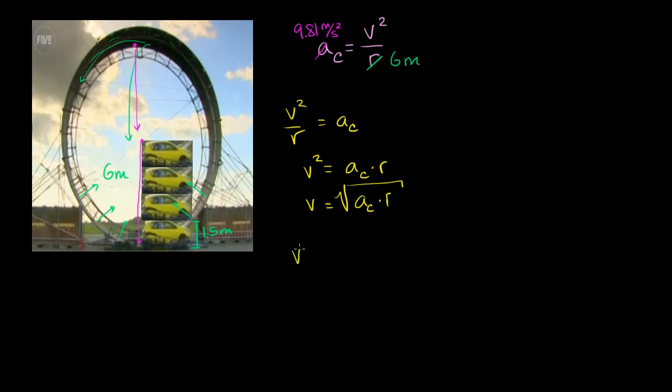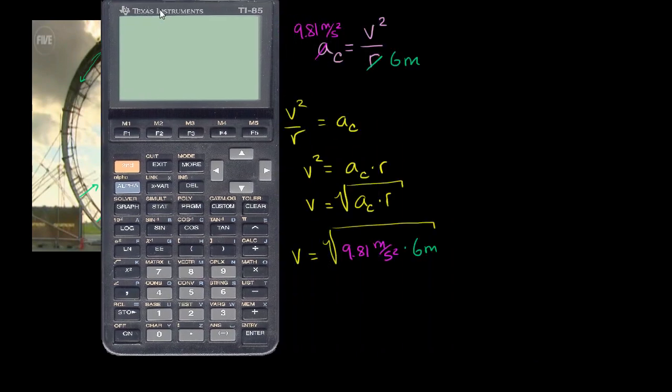And then if we plug in these numbers, this velocity that we have to have in order to stay in this circle is going to be the square root of 9.81 meters per second squared times 6 meters. And you can verify that these units work out. Let's get our calculator out to actually calculate this. So we are going to get the principal square root of 9.81 times 6 meters. It gives us 7.67, I'll just round to three significant digits, 7.67 meters per second.